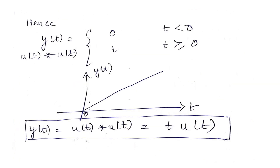Consolidating both cases: y(t) = 0 for t < 0, and y(t) = t for t ≥ 0. Sketching this, we see it is a ramp signal of slope 1 — a unit ramp for t ≥ 0 and 0 otherwise. This can be written compactly as y(t) = t · u(t). So u(t) convolved with u(t) = t · u(t).